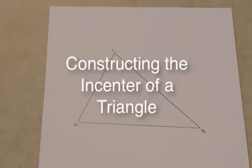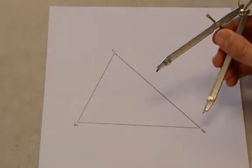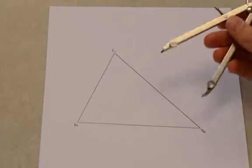So this video I'm going to show you how to find the in-center and to inscribe a circle. The in-center is the point of concurrency or intersection of the three angle bisectors of a triangle. So here's a triangle ABC and we need to bisect all three of these angles.